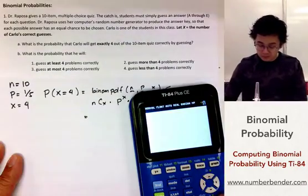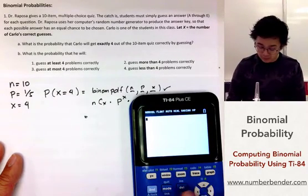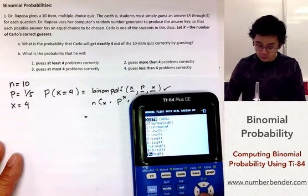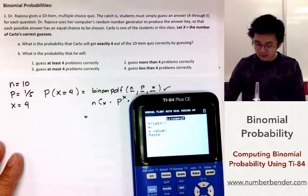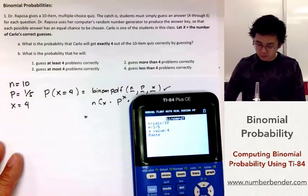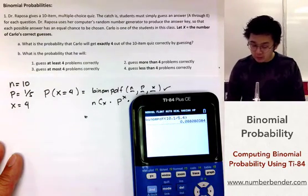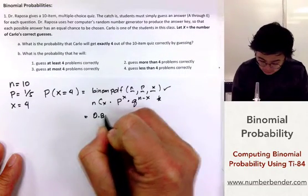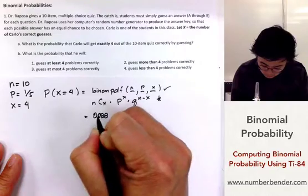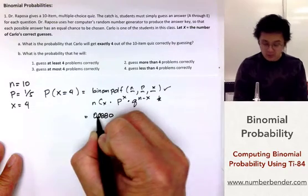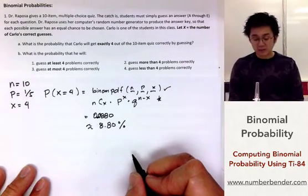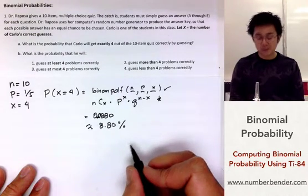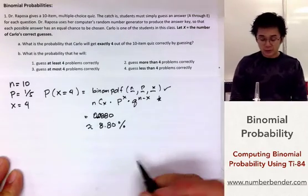To find the probability of getting 4 out of 10 correct answers by guessing, go to 2nd VARS and scroll down to binompdf. There are two functions — pdf and cdf — and for an exact value we use pdf. The syntax will be: trials = 10, probability of success = 1/5, and x = 4. The answer is 0.0880, or 8.80%. So the probability that you will get exactly 4 of the 10 items correctly is about 9% based on this probability.